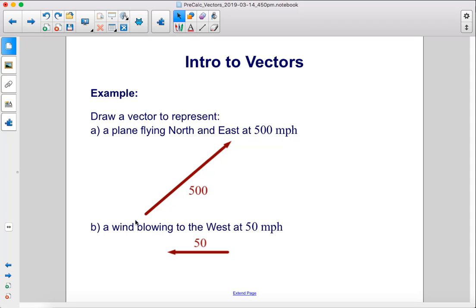Here we have our two vectors. This one points to the northeast with a magnitude of 500, and this one points to the west with a magnitude of 50.